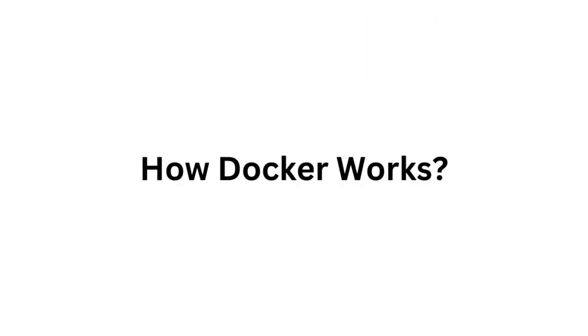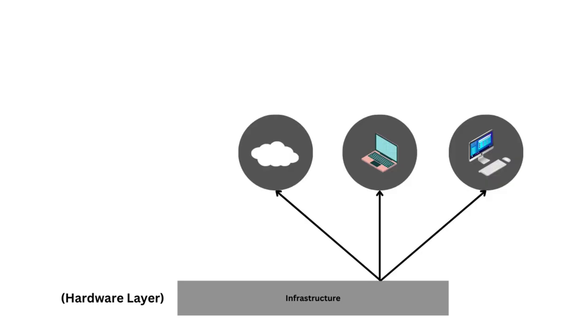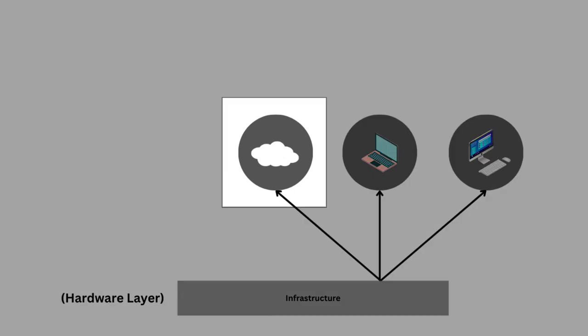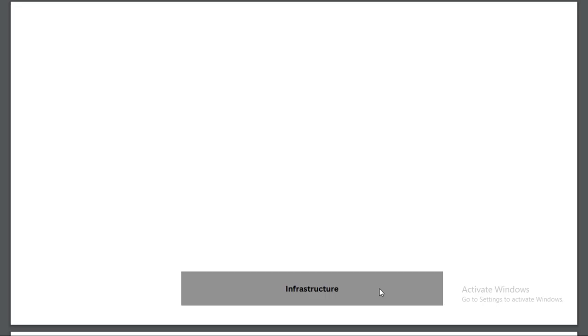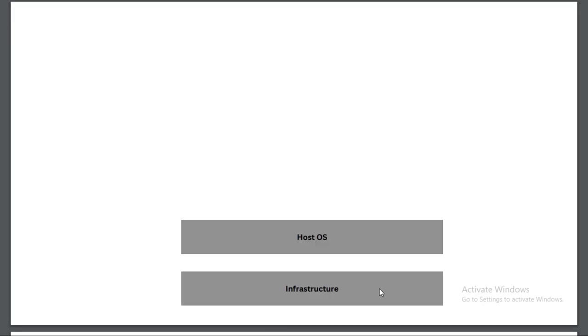Understanding how Docker works helps you understand the role of Docker images and Docker containers. To get started with Docker, first set up your infrastructure — this is your hardware. If you want to use Docker locally, you'll need a laptop or desktop. For cloud, you can choose an EC2 instance, AWS, or GCP. You need to have hardware ready.